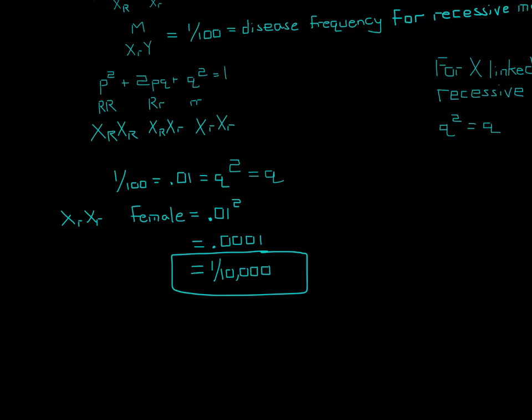A female would be affected 1 out of 10,000 times, and a male would be affected 1 out of 100. And that should make sense to you, because a male only needs one copy of this recessive to be affected, but a female would need two, and so it would be a lower probability that the female would be affected rather than the male. So I hope that helped, and thanks for watching.